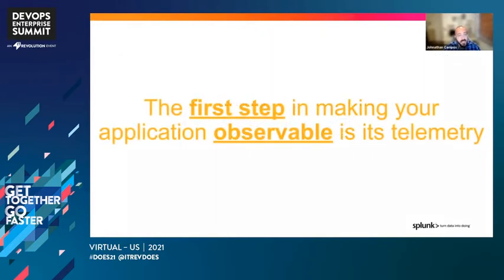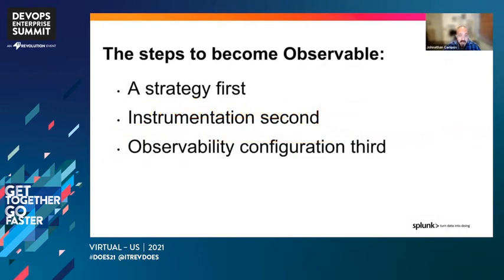The first step in making your application observable is all about telemetry — we have to gather the data. The data is the key to understanding exactly what's going on. First, we build a strategy: think about our application in detail, factor how many microservices we have, factor in what we want to monitor, and factor in the information we want to highlight. This is where instrumentation comes in — we instrument our applications to capture traces, spans, and metrics to really see exactly what's going on. Third, we configure our observability backend so that we can build the dashboards and charts needed to clearly see what's going on and maintain our SLAs.